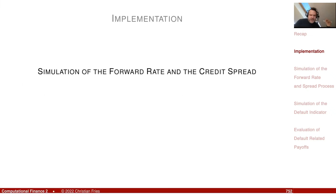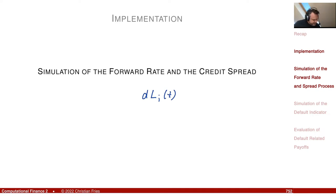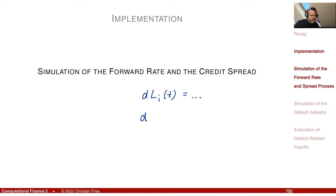We want to do a Monte Carlo simulation. We have two Ito processes: the non-defaultable forward rates and now we can look at the spread. We motivated that it is maybe nicer to simulate the credit spread, because then the intuition for volatility and correlation is clearer — you can specify the volatility of the difference and the volatility of the base curve. For writing down the stochastic processes and deriving the drift, the formulation with the defaultable forward rate was nicer.